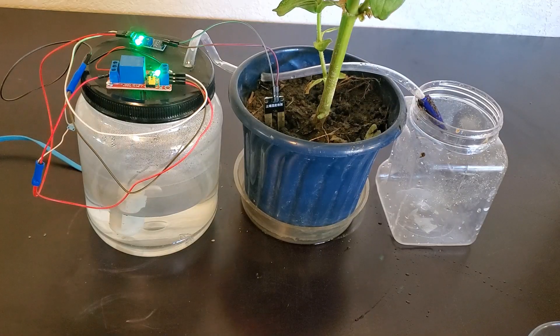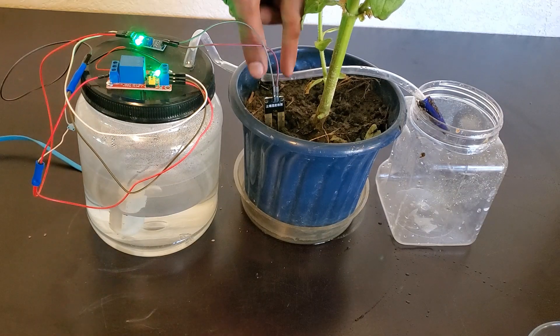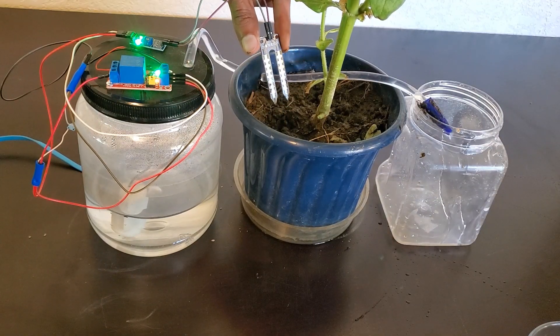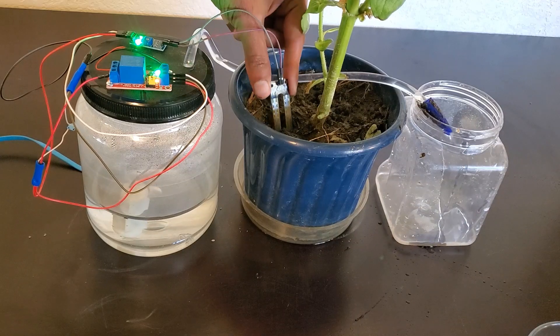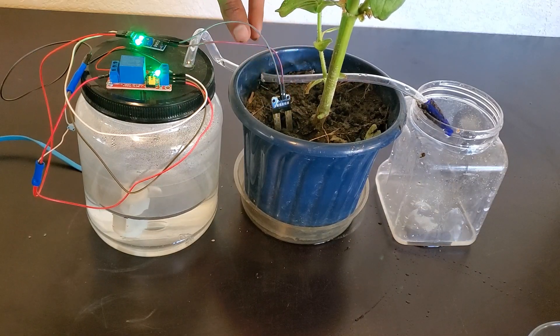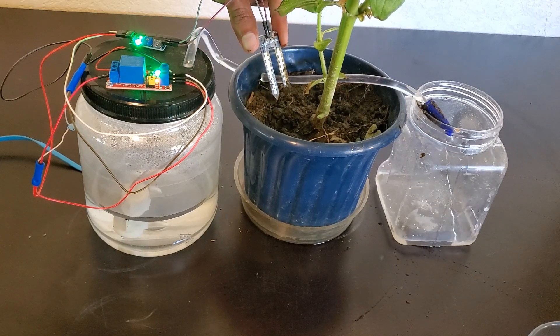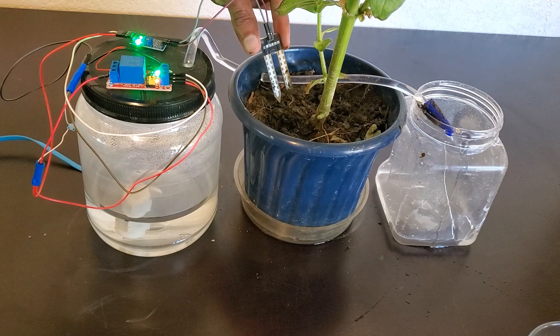To do another demo of how it works, I've added this jug to the side of my pot. Since the soil moisture is already saturated, I will just lift the sensor out of the pot to simulate a non-saturated environment. As you can see, once the sensor is lifted, the pump turns on.